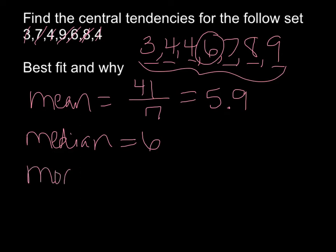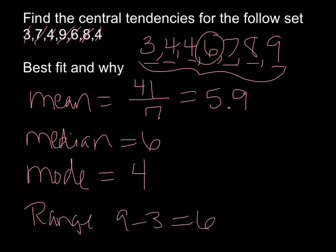My mode is the number that occurs the most. My mode would be 4 here because the 4 occurs twice. And my range is my highest minus my lowest. So my range of data is 6.